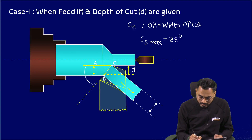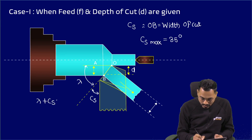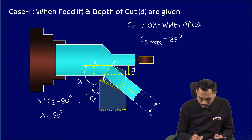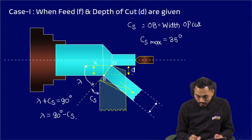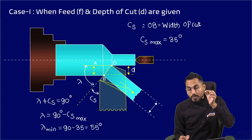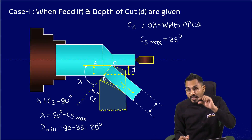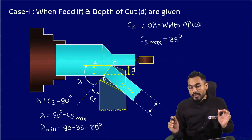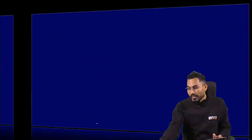From the figure, we can see that lambda plus C_s is exactly equal to 90 degrees. So lambda equals 90 degrees minus C_s. If C_s is at its maximum of 35 degrees, the minimum value of lambda is 90 minus 35, which equals 55 degrees. So lambda cannot be less than 55 degrees, and the side cutting edge angle C_s cannot be greater than 35 degrees.